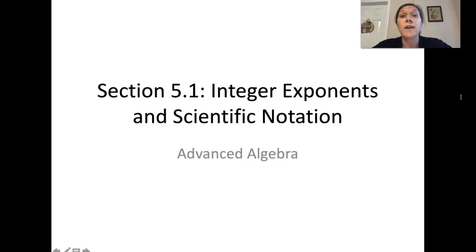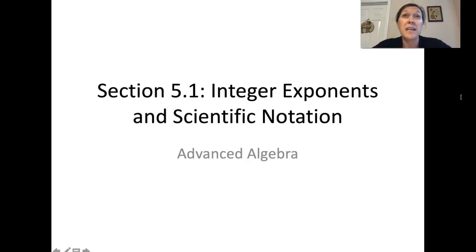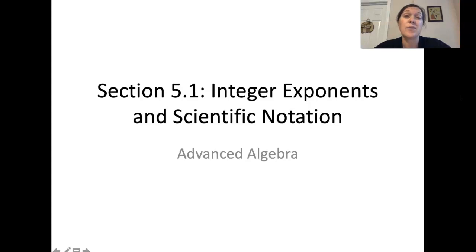Chapter 5 gets us into the world of polynomials and all the different things we can do with them. Before we can get into the operations of polynomials, we have to go through all of the different types of properties that can occur with exponents, which then also ties in scientific notation.